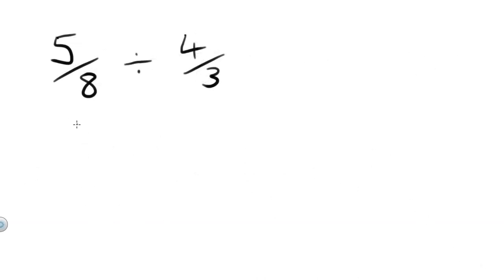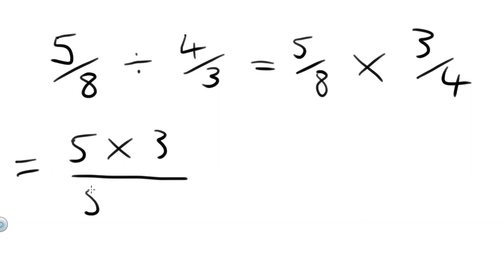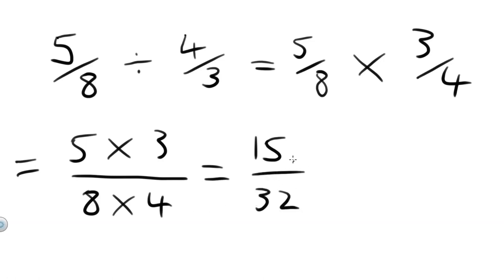Next one: 5 eighths divided by 4 thirds. Well that's the same as saying 5 eighths multiplied by 3 over 4 — the reciprocal of 4 thirds, so 3 quarters. Multiplying them together, tops by tops: 5 times 3 over 8 times 4. 5 threes are 15, and 8 times 4 equals 32. Can we simplify that any further? No, we can't — there are no common factors. So that's our final answer, 15 over 32.